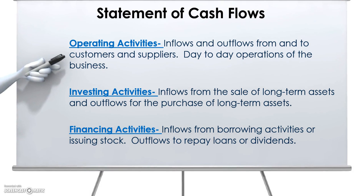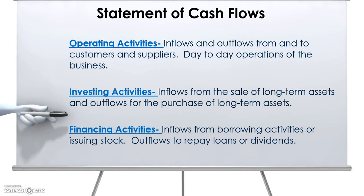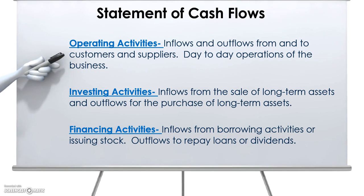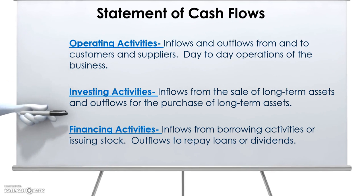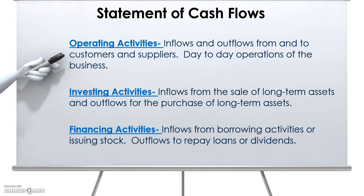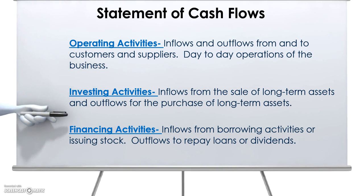Operating activities are inflows and outflows from and to customers and suppliers. The operating activities section basically encompasses all of your day-to-day operations — your dealings with customers, whether you invoice or collect a payment from a customer, or whether you pay a vendor or supplier. These would be considered normal day-to-day operations and be included under the operating activities section.